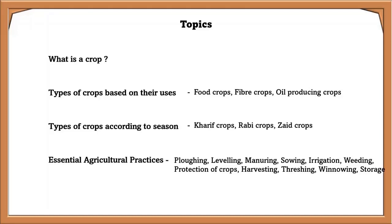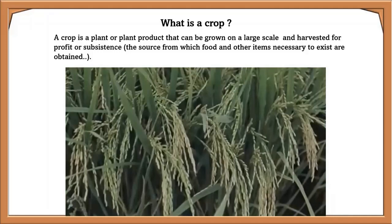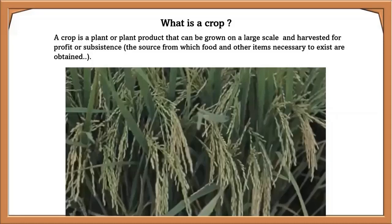What is a crop? A crop is a plant or plant product that can be grown on a large scale and harvested for profit or subsistence — the source from which food and other necessary items are obtained. India is considered a top producer of many types of crops.